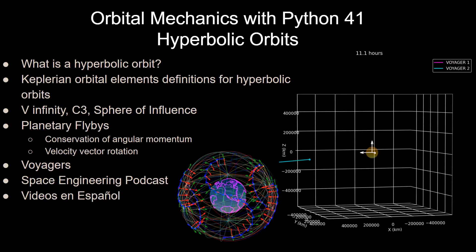This is the 41st video in the series, and this one will be going over what is a hyperbolic orbit, the Keplerian orbital elements definitions for hyperbolic orbits, v-infinity, c-3, and sphere of influence, and how they are very important values when doing analysis for planetary flybys, and also how these flybys conserve angular momentum and rotate a velocity vector before and after the flyby, and then a little bit also into the Voyager's trajectories.